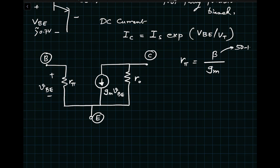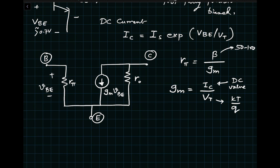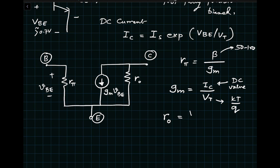Transconductance Gm is given by IC divided by VT, where IC is the DC operating point value and VT is the thermal voltage KT/Q. It's important not to confuse VT (= KT/Q) for the bipolar transistor with VTH, the threshold voltage for MOSFETs. Output resistance Rout equals VA divided by IC, where VA is the Early voltage.